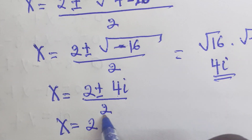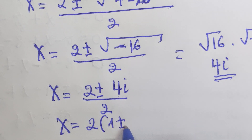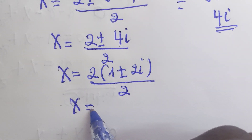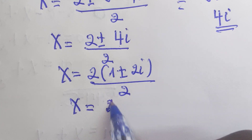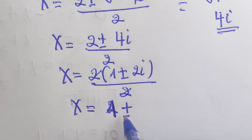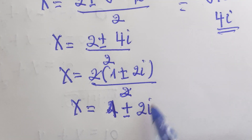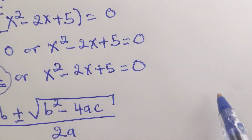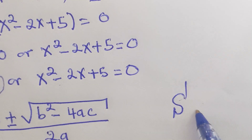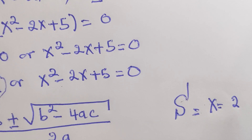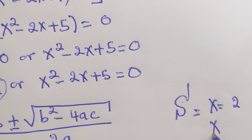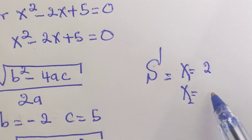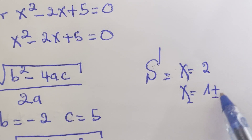Then x equals 2, factoring out, gives 1 plus or minus 2i, over 2, which simplifies. Our solution is: x equals 2, or x equals 1 plus or minus 2i.